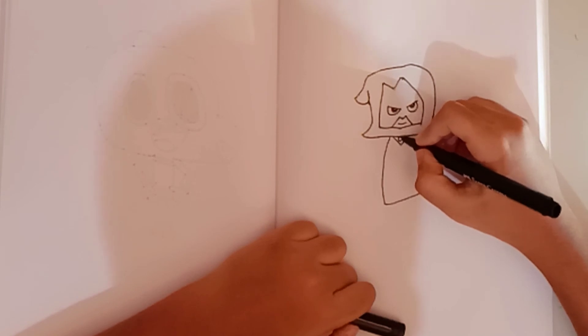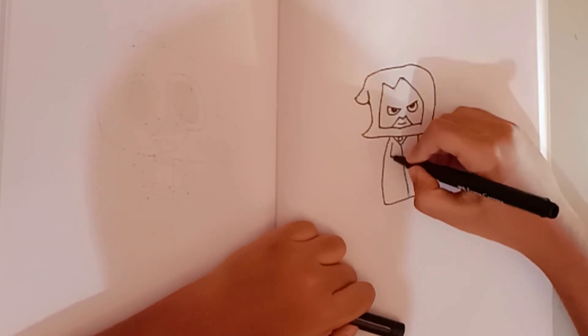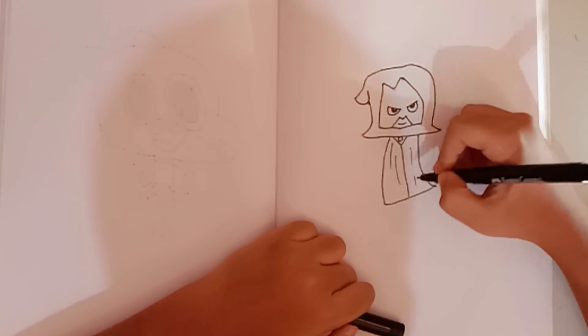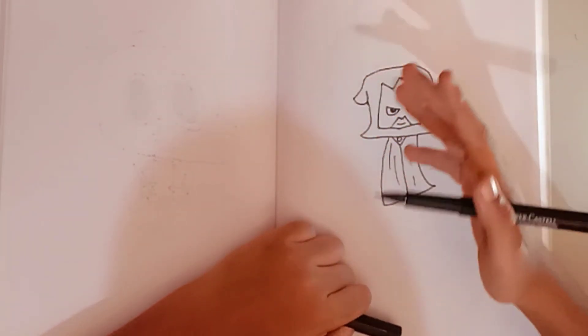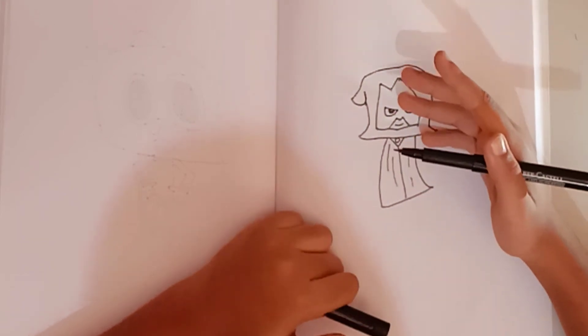Now let's draw the collar. We'll draw her line and folds. And that's pretty much it. It's Raven from Teen Titans Go.